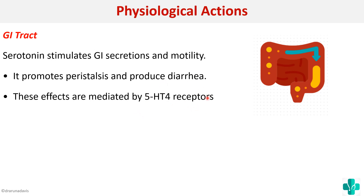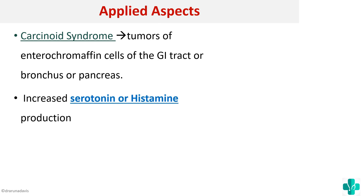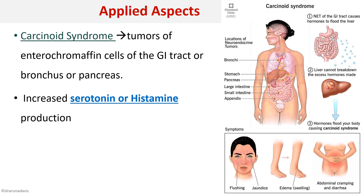An important applied aspect is carcinoid syndrome, which involves tumors of the enterochromaffin cells of the GI tract, bronchi, or other neuroendocrine cells of the body. In such cases there can be increased serotonin and histamine production. Symptoms include flushing, jaundice, edema, abdominal cramping, and diarrhea — these are all features of carcinoid syndrome.